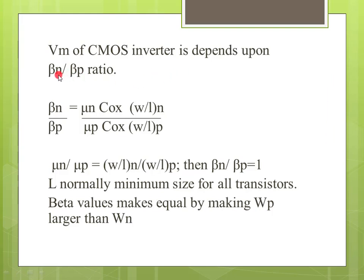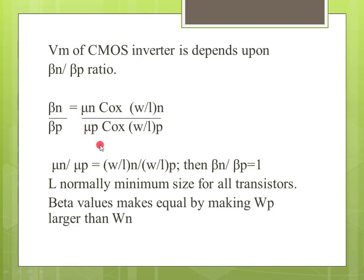The V_M equation is: V_M depends on beta N by beta P. Beta N = Mu_N * Cox * (W/L)_NMOS; beta P = Mu_P * Cox * (W/L)_PMOS. Cox is oxide capacitance; Mu_N by Mu_P mobility ratio is approximately 2 to 3. When beta N by beta P equals 1, V_M = VDD/2 — the exact half value.